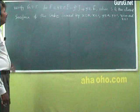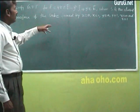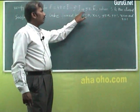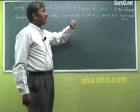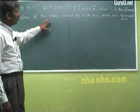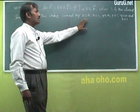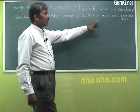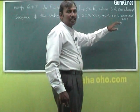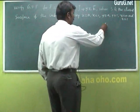Second problem: Verify the Gauss Divergence Theorem for F vector = 4xzi − y²j + yzk, where S is the closed surface of the unit cube formed by the planes x=0, x=1, y=0, y=1, z=0, and z=1.